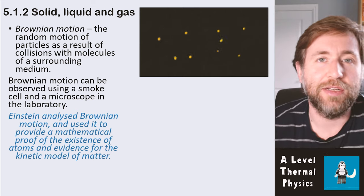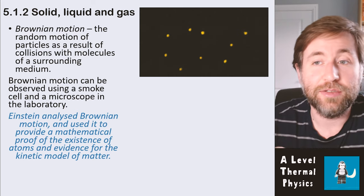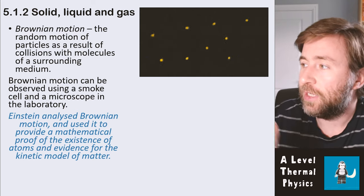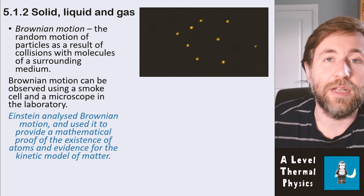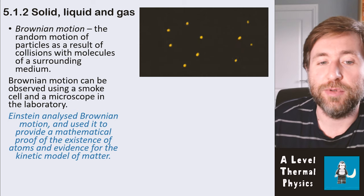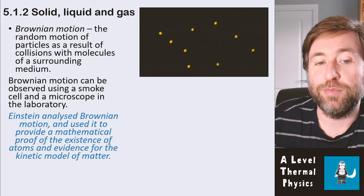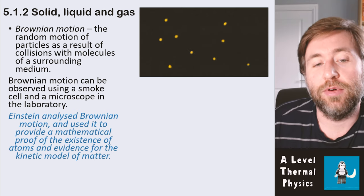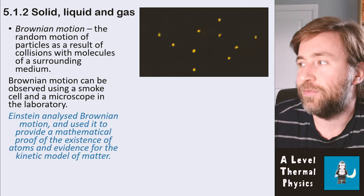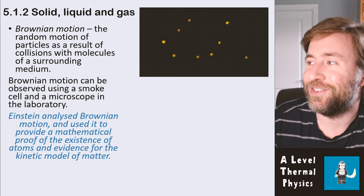You take some smoke and trap it in a little piece of glass and put a light on it, and you can actually see the smoke particles dancing—they have this kind of random zigzagging motion. Einstein analyzed that in 1905 in his annus mirabilis and used it to provide a mathematical proof of the existence of atoms, and that's evidence then for the kinetic model of matter.